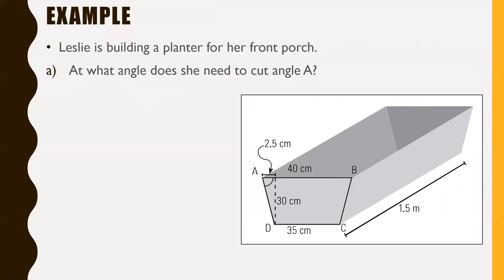Leslie is building a planter for her front porch — at what angle does she need to cut angle A? Angle A is this angle down here. To know what angle she needs to cut at, we need some information about the shape. The bottom line is that with quadrilaterals, it's often most useful to try to break it down into any triangles you can, and this picture has kind of done it for us.